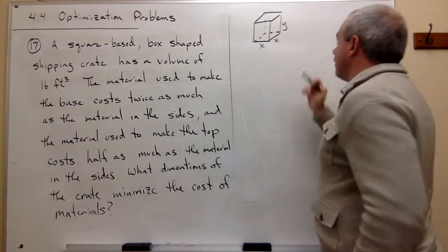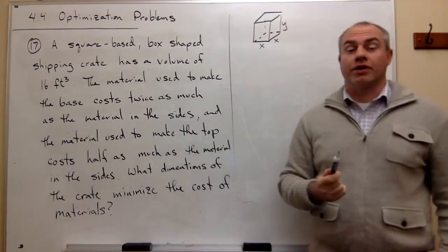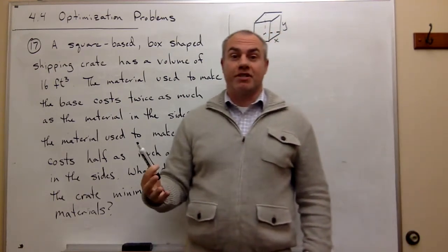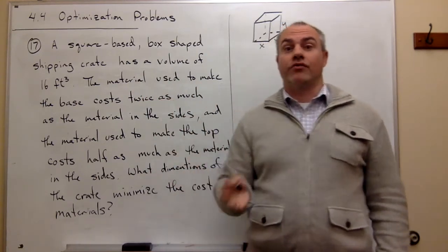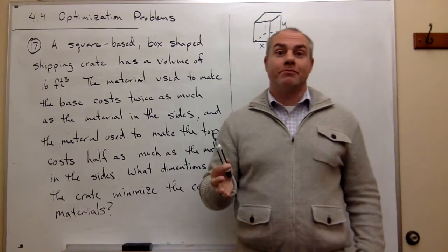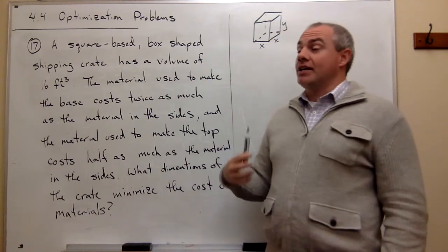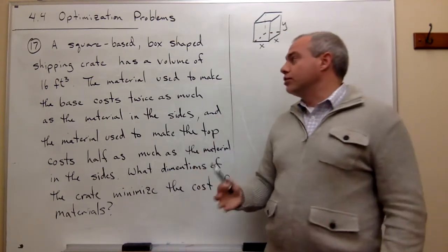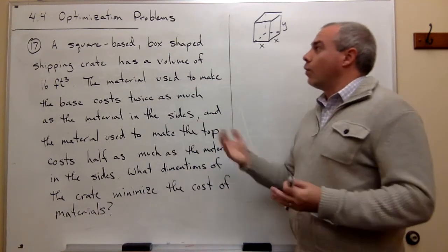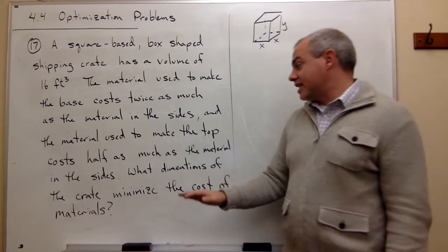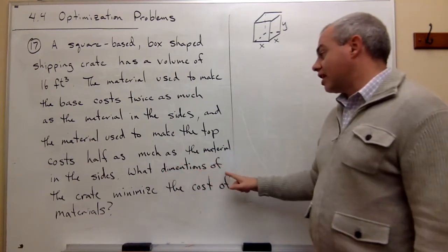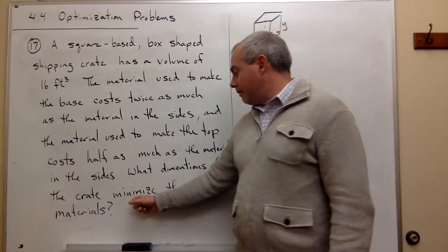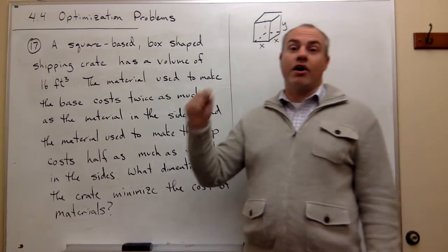Now that we've drawn a picture and labeled things with appropriate labels, we need to ask the all-important question in optimization problems. You get this part right, and you will get more optimization problems right than ever. Just ask: what is it I'm trying to make big? What is it I'm trying to make small? Looking through the problem, it says right at the end: what dimensions of the crate minimize the cost? So I want to minimize cost — I want to make cost small.